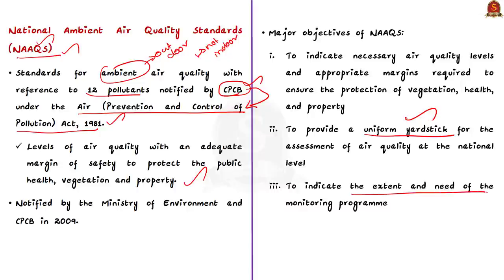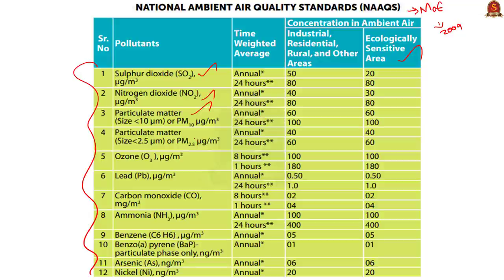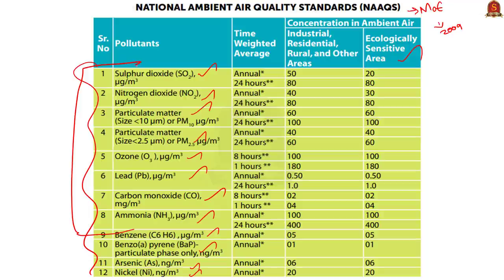The limits set by the Central Pollution Control Board help ensure that vegetation, health, and property are not affected, and maintain a uniform yardstick for air quality assessment at the national level. Although the 12 pollutants are notified by the CPCB, the national air quality standards were notified by the Ministry of Environment in 2009. The 12 pollutants are: sulfur dioxide, nitrogen dioxide, PM2.5, PM10, ozone, lead, carbon monoxide, ammonia, benzene, benzopyrene, arsenic, and nickel. The first 8 pollutants are monitored daily.